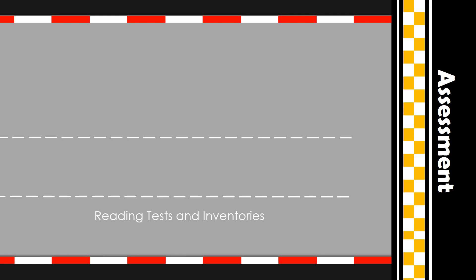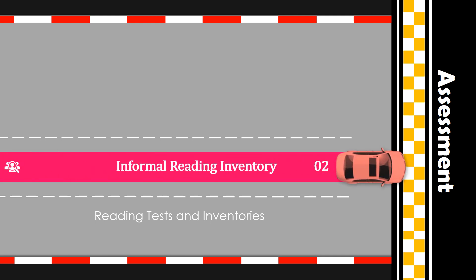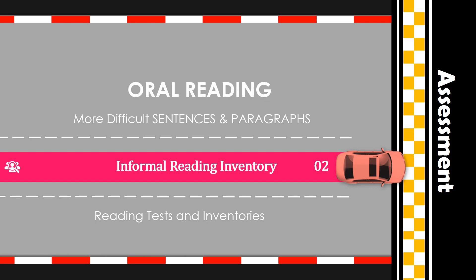Most school divisions have developed their own reading tests and inventories to determine the students' reading ability. An informal reading inventory usually consists of a series of progressively more difficult sentences and paragraphs for oral reading. The students' mistakes in reading skills are recorded, particularly in pronunciation of vowels and consonants, omissions, reversals, substitutions, and comprehension.